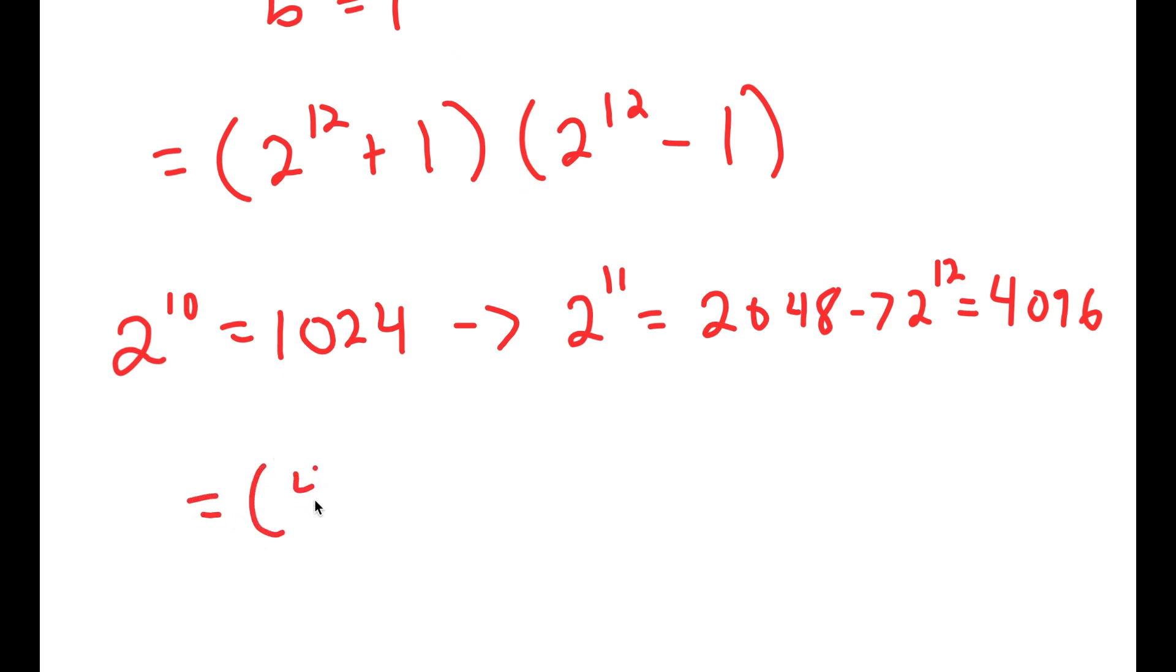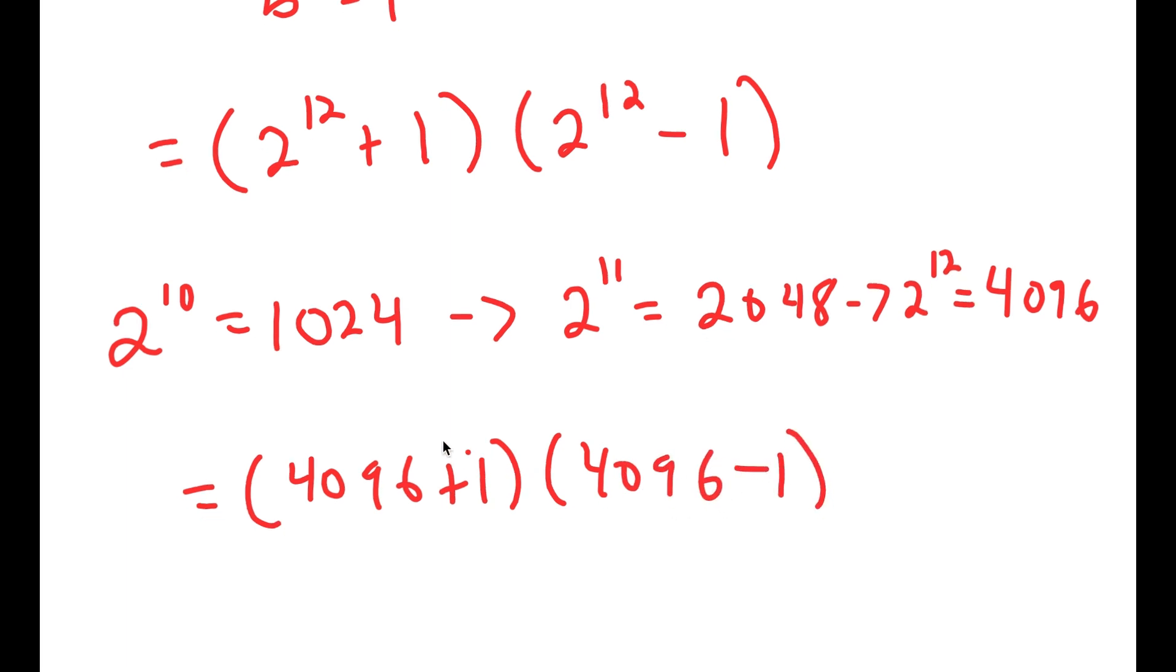So now I have 4,096 plus 1 times 4,096 minus 1. 4,096 plus 1 is 4,097, and 4,096 minus 1 is 4,095.